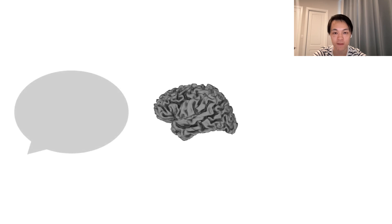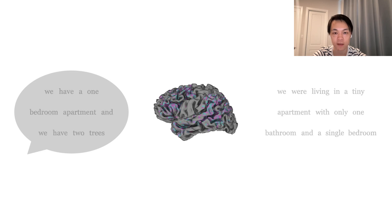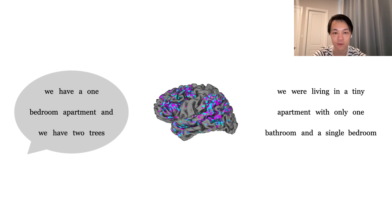We found that the decoder can recover the gist of what the user was hearing. In this example, the user heard the words, "we have a one-bedroom apartment and we have two trees," and the decoder predicted the words, "we were living in a tiny apartment with only one bathroom and a single bedroom."